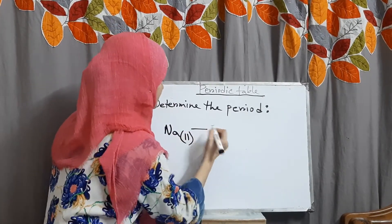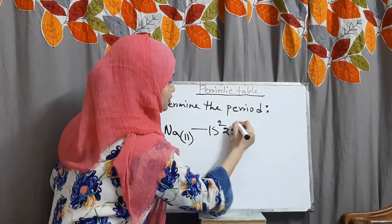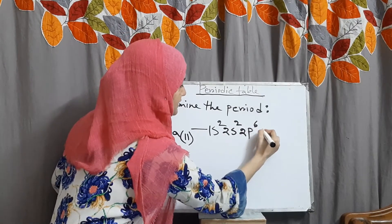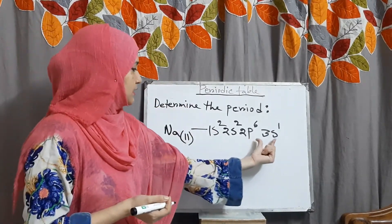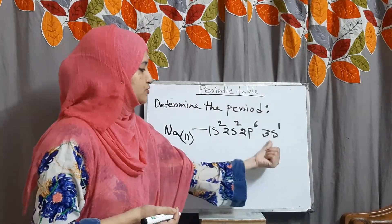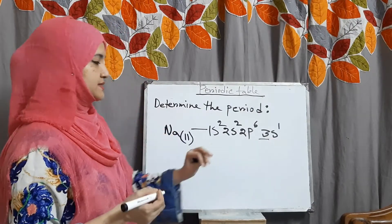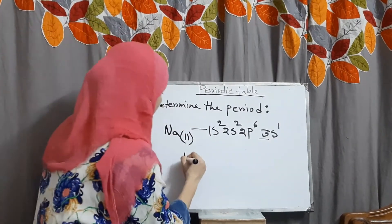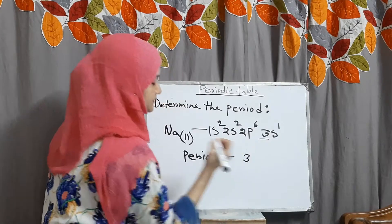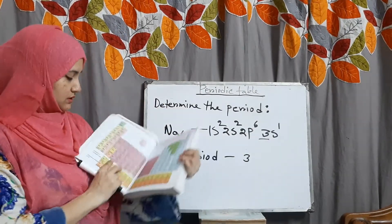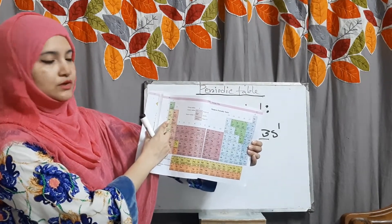Let's take sodium as another example. Sodium has atomic number 11, meaning the number of electrons is also 11. Its electronic configuration is 1s2, 2s2, 2p6, 3s1. The outermost energy level is now 3, and this represents the period number of sodium. That's why sodium belongs to period number 3. You can check — sodium is the first member of period 3.